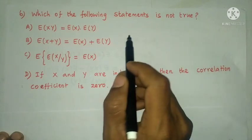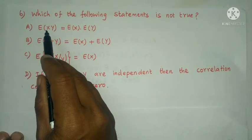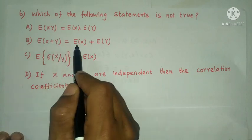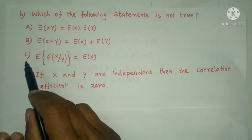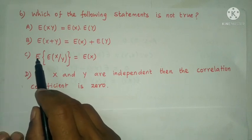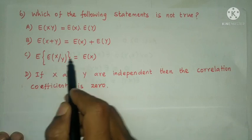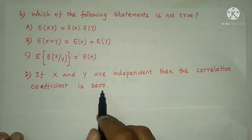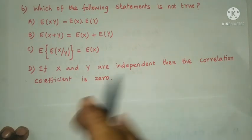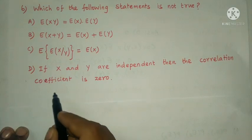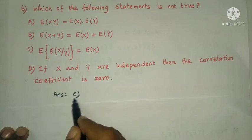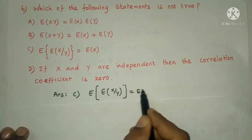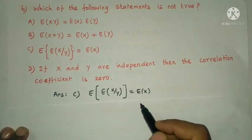Next question: which of the following statements is not true? Option A: E(XY) = E(X)·E(Y); option B: E(X+Y) = E(X)+E(Y); option C: E(E(X)) = E(X); option D: if X and Y are independent, then the correlation coefficient is 0. The answer is option C — E(E(X)) equals E(X) is the statement that does not satisfy the true criteria.